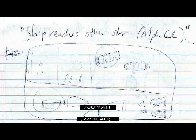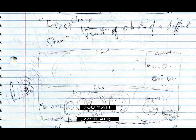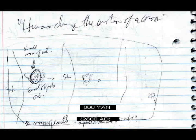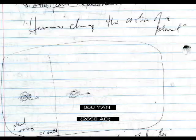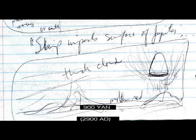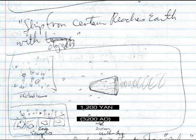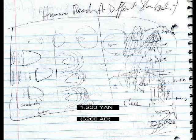Ship reaches other star: Alpha Centauri. First close-up pictures of planets of a different star. Living objects found around another star — bacteria made of DNA. Humans change the motion of a moon. Humans change the motion of a planet. Ship impacts Jupiter. First image of surface of Jupiter. Ship from Centauri reaches Earth with objects. Humans reach a different star: Centauri.